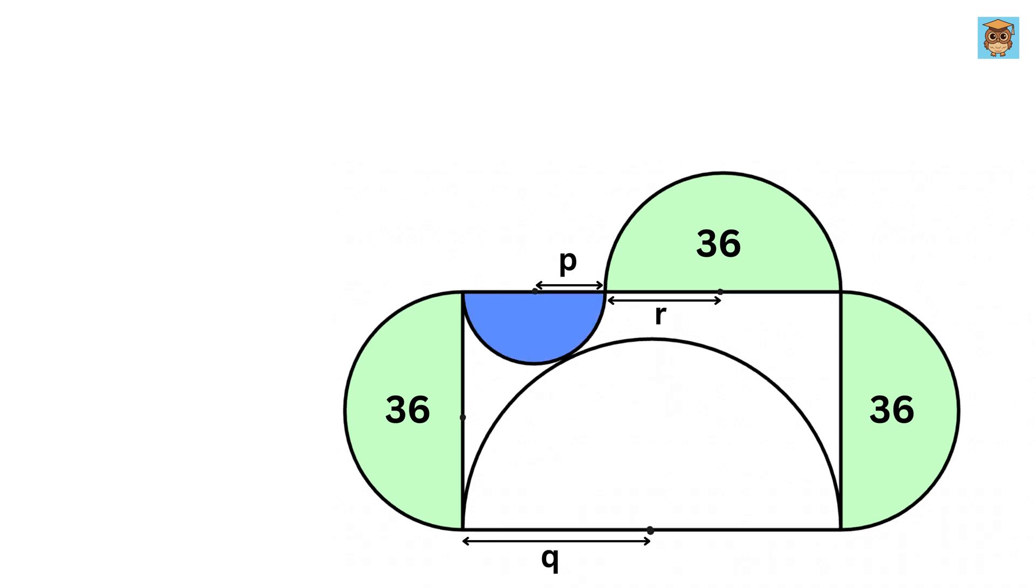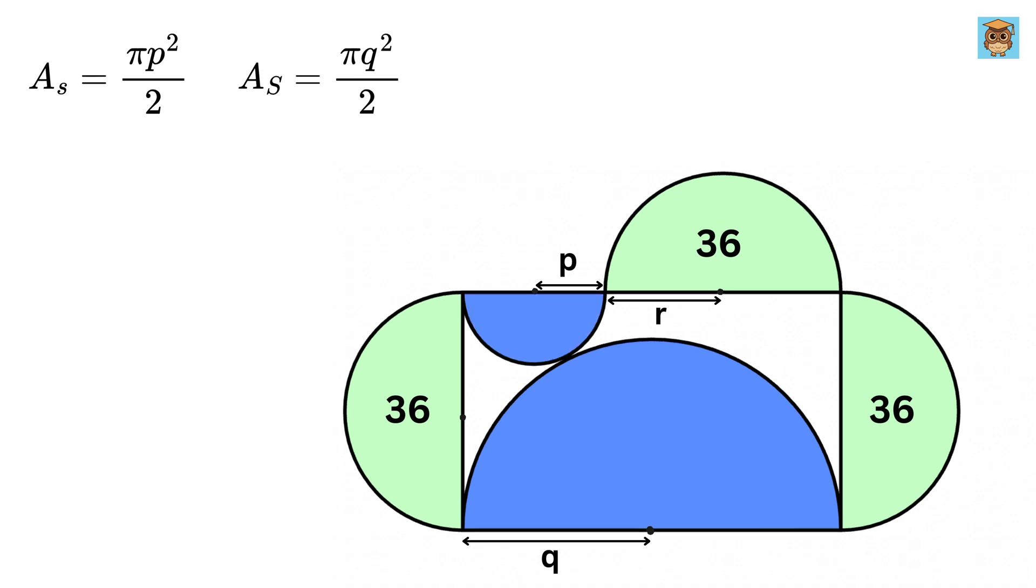Thus, the area of this semicircle will be π P² over 2, and the area of this semicircle will be π Q² over 2. Therefore, their sum will be π P² over 2 plus π Q² over 2, or π over 2 times P² plus Q².